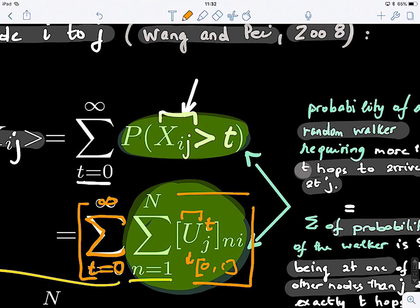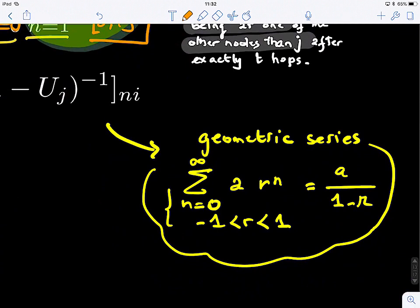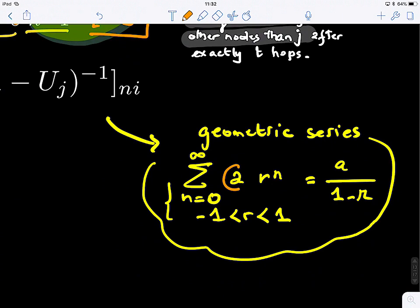And a geometric series is, this is a definition. So the limit that it has is if you have a constant A times R to the power of N, where N varies from 0 to infinity, and the R is bounded between negative 1 and 1, then this is actually the value to which this sum will converge. So here it means that we have 1 minus R to the power of negative 1, and this is exactly what we have here.